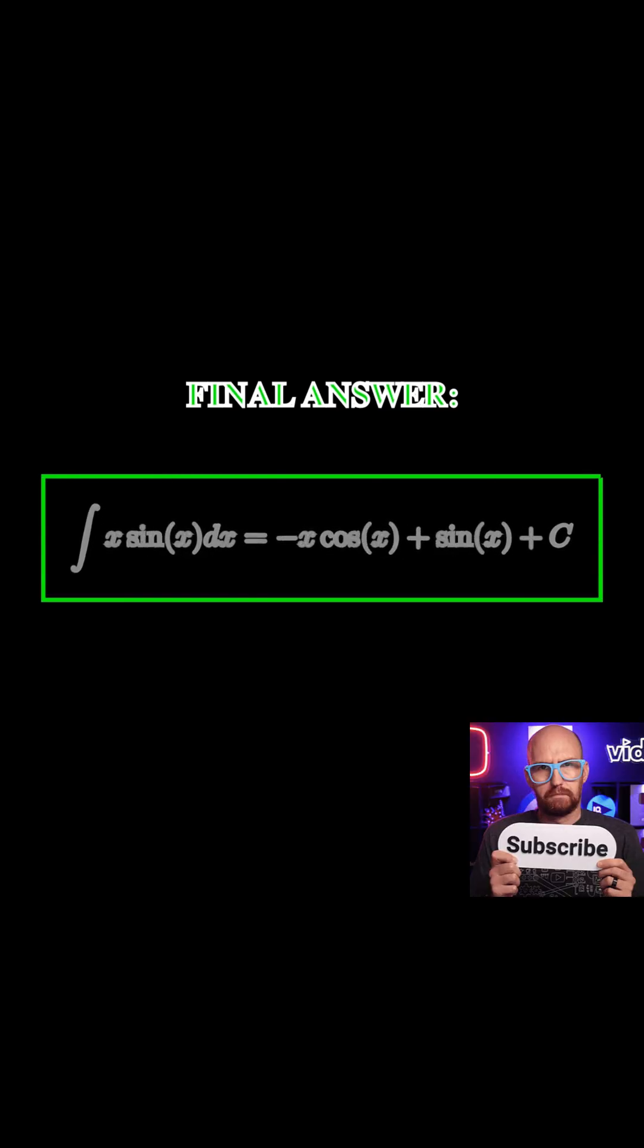This simplifies to negative x cosine x plus the integral of cosine x dx, which gives us negative x cosine x plus sine x plus c.